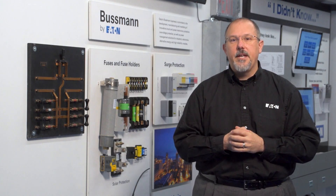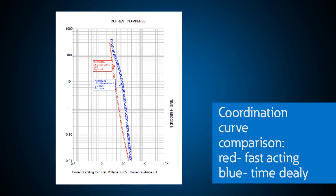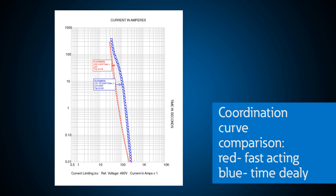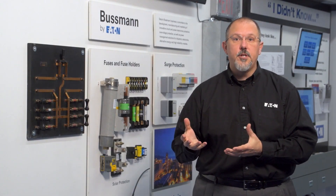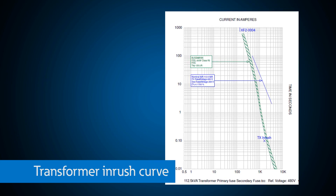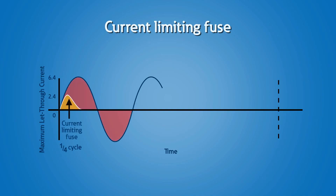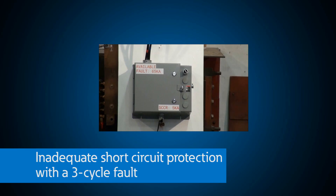We now understand the two basic fuse types: time-delay fuses for motor inrush currents and transformer energization, and fast-acting fuses for loads without temporary overloads. Both types are current-limiting fuses — their physics prevent even one half-cycle of current flow during short circuit events in their current-limiting region. One cycle is 0.016 seconds; one half-cycle is 0.008 seconds or 8 milliseconds. The fuse limits both the duration and the peak current reached.